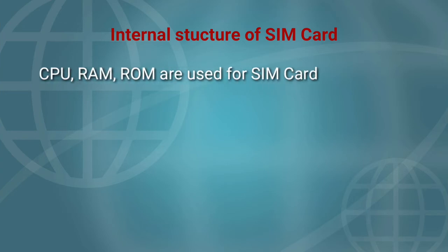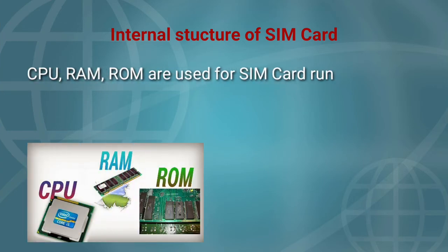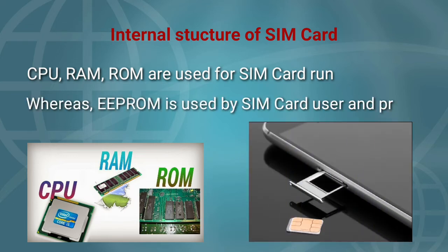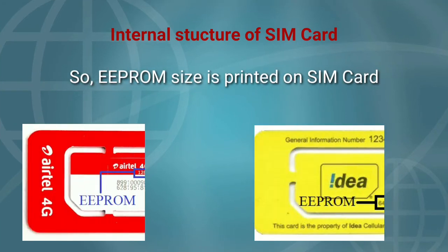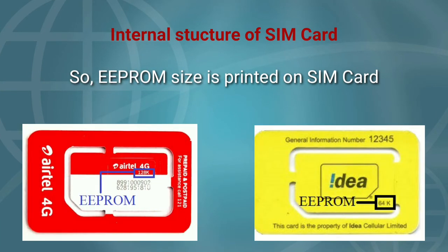CPU, RAM, and ROM are used for SIM card operation. Whereas EEPROM is used by the SIM card user and provider extensively. So, the EEPROM size is printed on the SIM card.